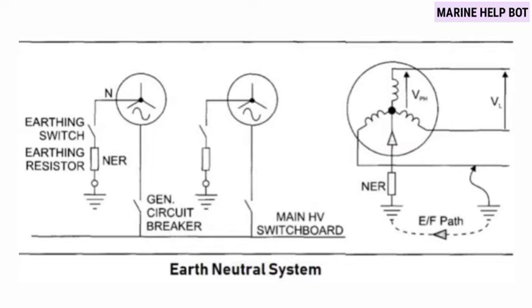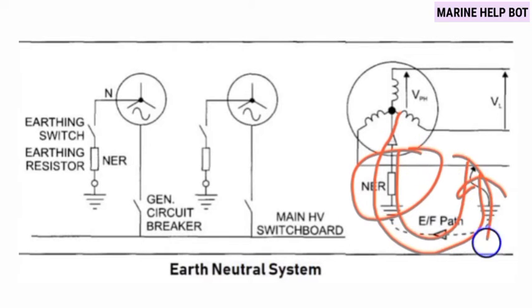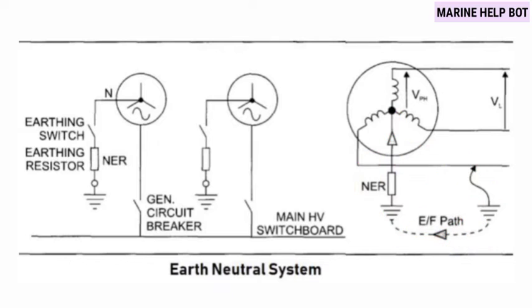Summarizing the earth neutral system: the neutral is connected to the hull with the help of a resistor, also known as the neutral earth resistor. Sometimes the exam asks about the construction and how it is connected, so now you can explain that.